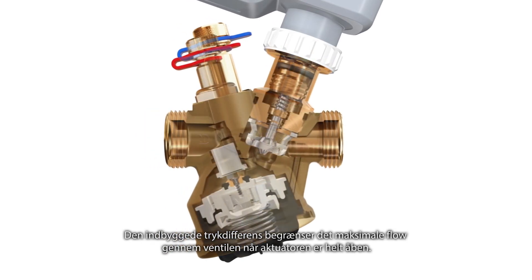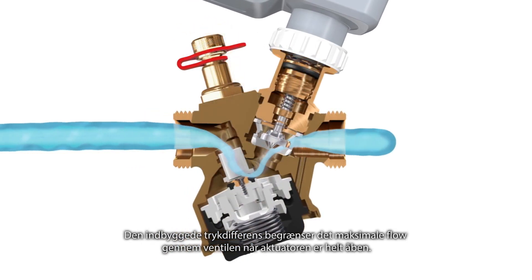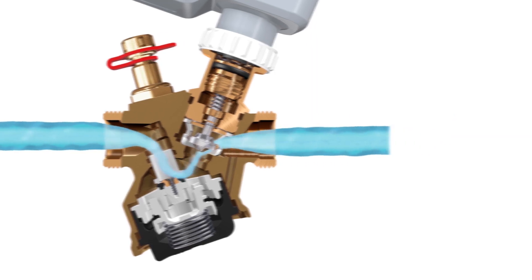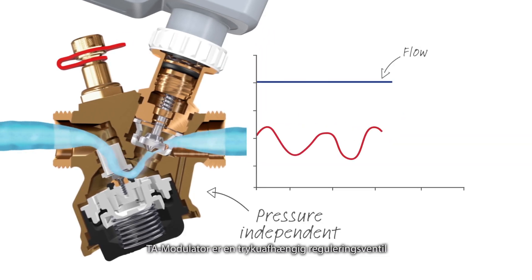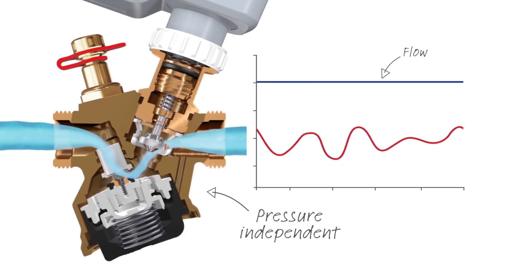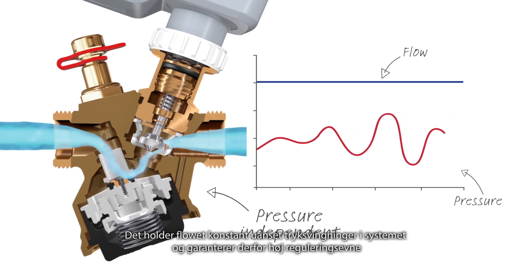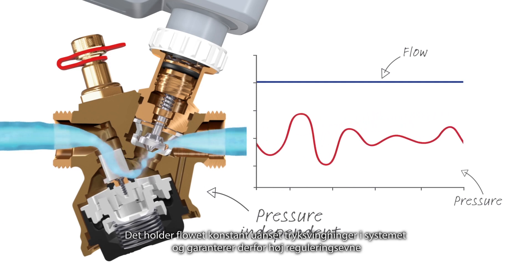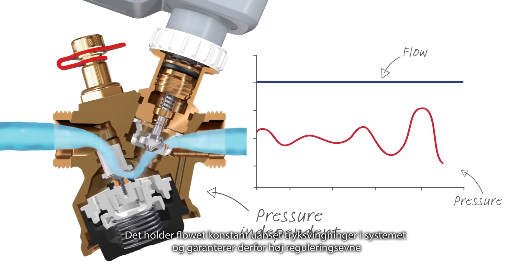The built-in pressure controller limits the maximal flow through the valve when the actuator is fully open. TA modulator is a pressure independent valve. It keeps the flow constant regardless of pressure fluctuations in the system and guarantees high control authority.